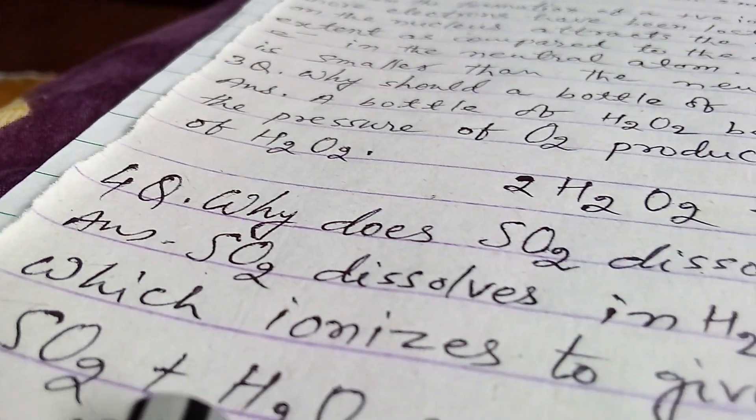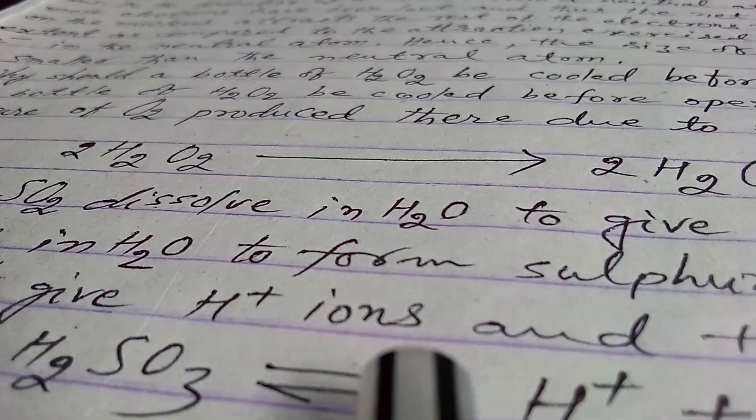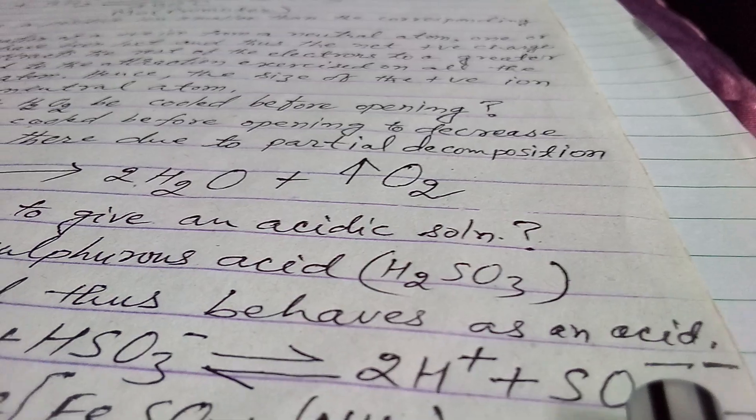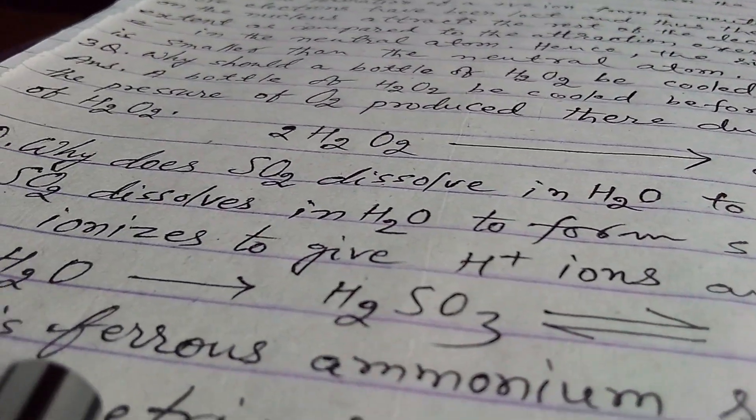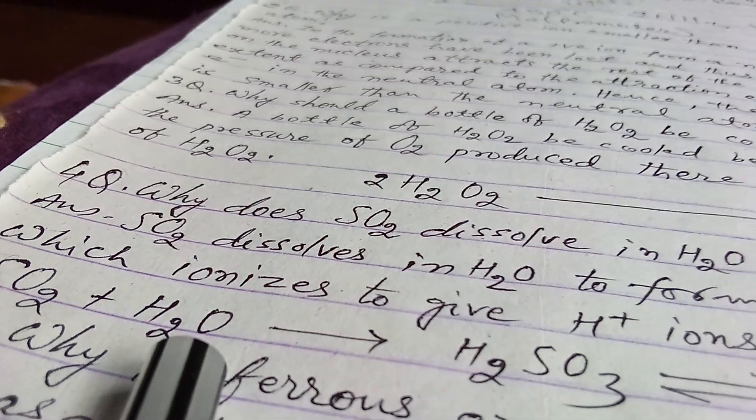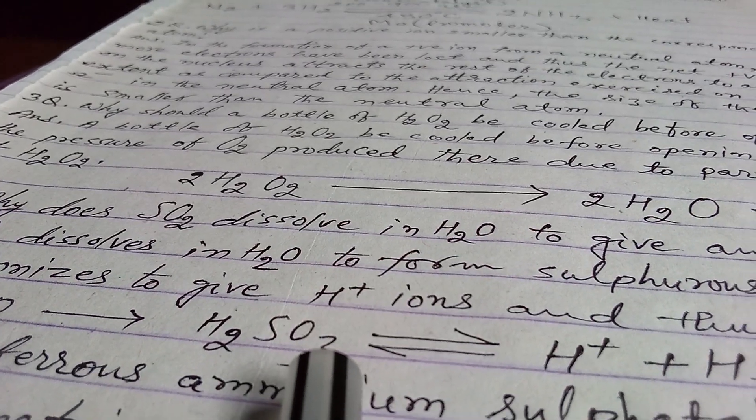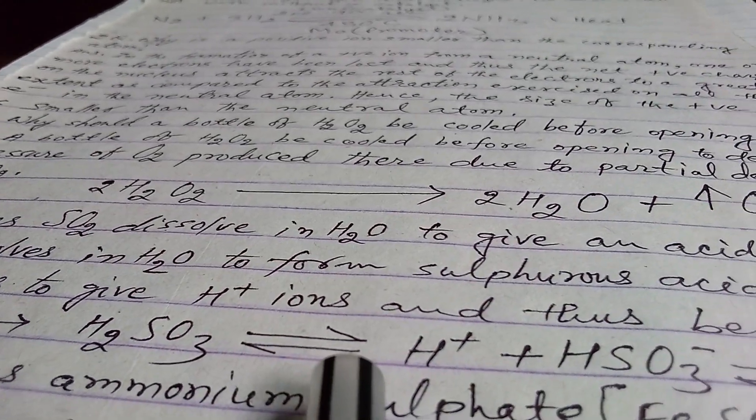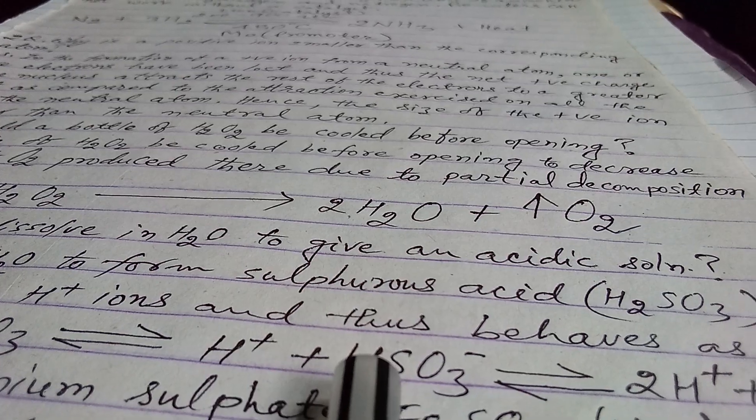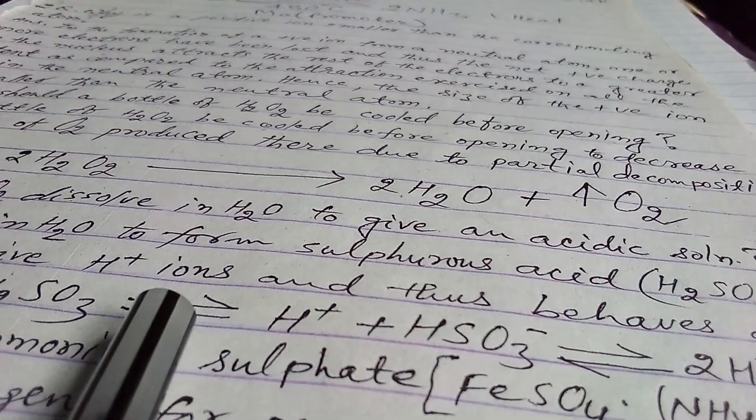which ionizes to give hydrogen ions and thus behaves as an acid. The reaction is as follows: this changes into hydrogen ion plus HSO2. Plus H2O arrow H2SO3 and this again changes into hydrogen ion plus HSO3 ion. Again it is a reversible reaction.